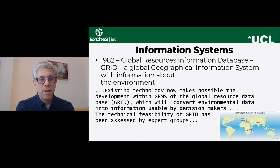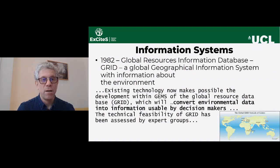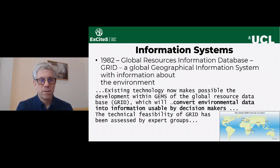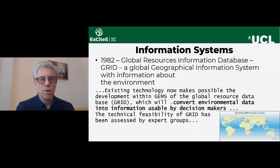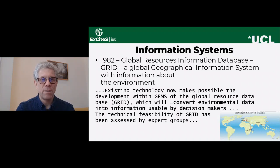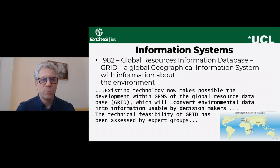A decade later, in 1982, there was already excitement about the potential of geographical information and how it could be used. There was talk of creating a global geographical information system to capture environmental data — a UN system designed to convert environmental data into information usable by decision-makers, and to share this information electronically across the globe. This was somewhat of a dream at the time, because the internet and the ability to rapidly send large amounts of data were still emerging.